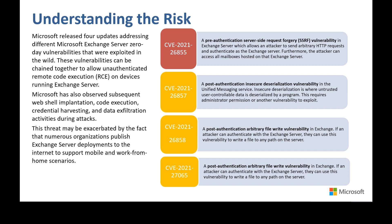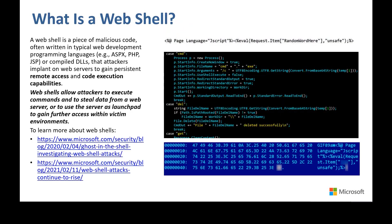Microsoft has observed attackers creating web shells to gain persistent access to systems for carrying out further post-exploit activities. A web shell is a piece of malicious code often written in typical web development programming languages. Attackers implant a web shell on web servers to gain persistent remote access and code execution capabilities. Web shells can allow attackers to execute commands of their choosing, steal data from a web server, and use the server as a launching pad to gain further access within a victim environment.